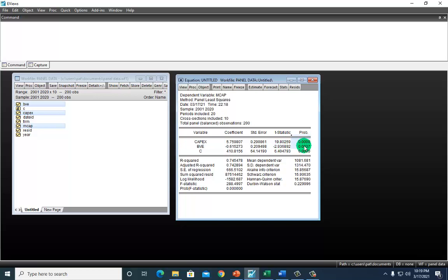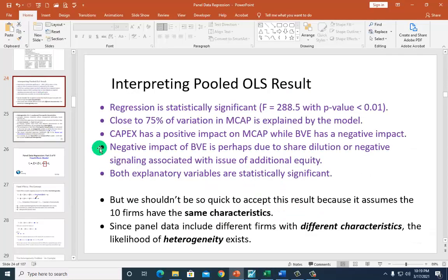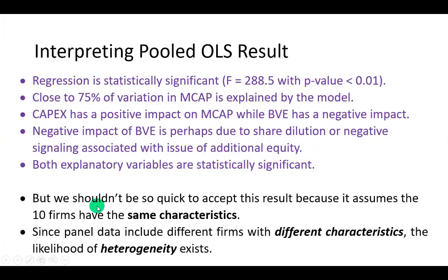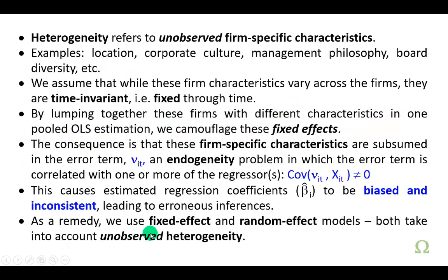When you look at all of this, it looks pretty good. But the problem is that pooled OLS assumes that the 10 firms have the same characteristics. Since panel data includes different firms with different characteristics, the likelihood of heterogeneity exists.